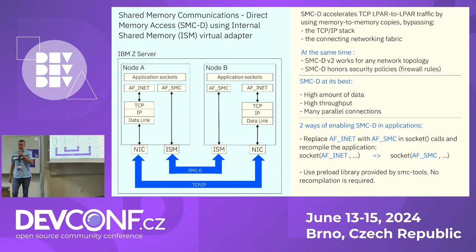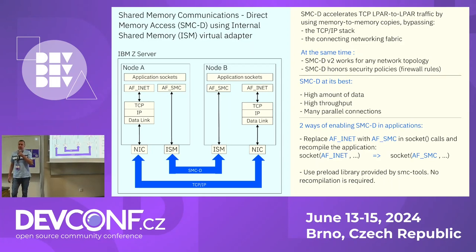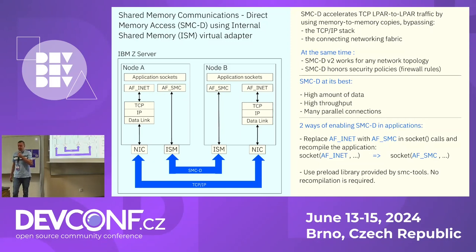The performance improvement is achieved because data is written directly into memory, bypassing TCP/IP stack processing on both sides. Instead of using TCP/IP, SMC uses Internal Shared Memory or ISM technology. ISM is a virtual adapter and virtual device in Linux, so you don't need any additional physical hardware such as adapters, switches, or card slots.